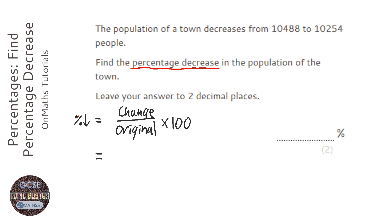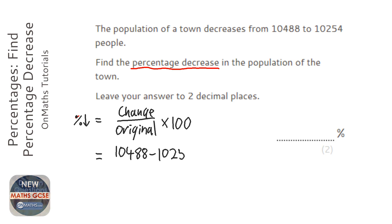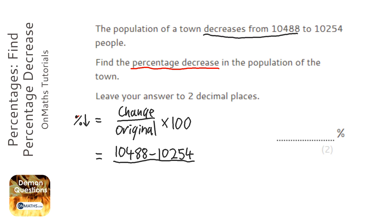To work out the change here, it's going to be the initial amount take away the final amount — on this one because it's going down and we don't want to have a negative — over the original. It decreases from this amount to this amount, so the original is going to be the 10488, and then times by 100.